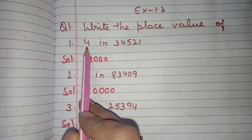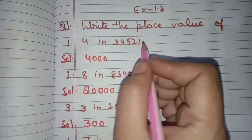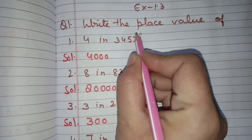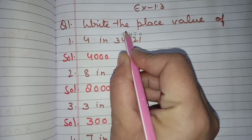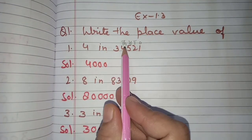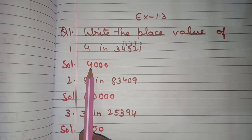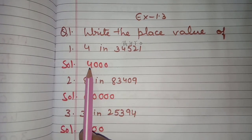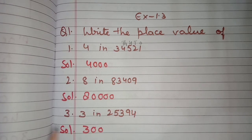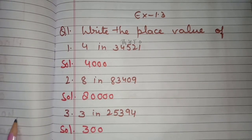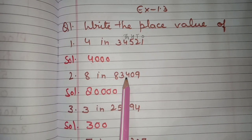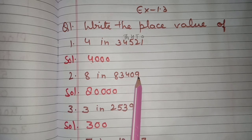What is the place value of 4 in this number? You can just check: ones, tens, hundreds, and thousands. 4 is at the thousands place, so its place value is four thousands. Next is 8 in 83,409.